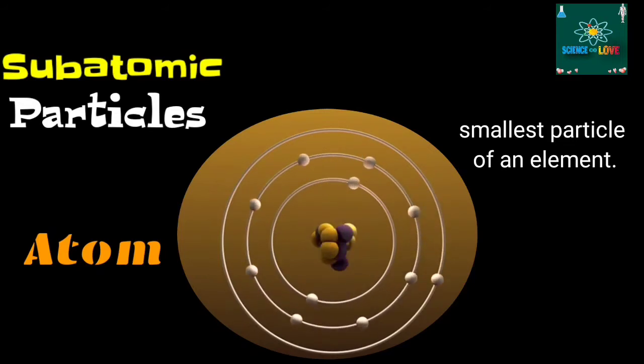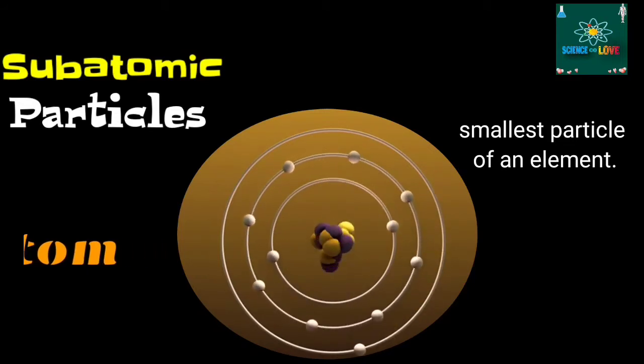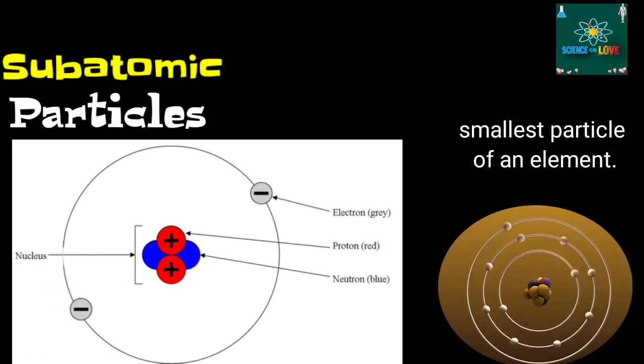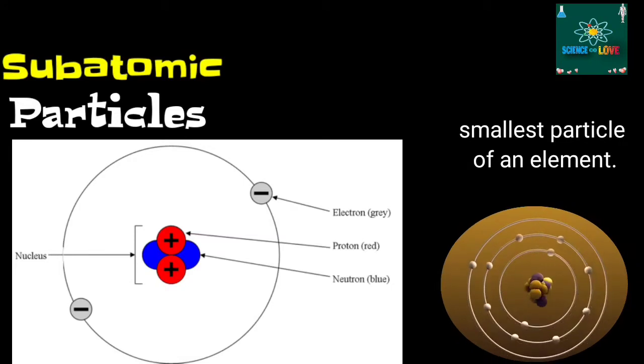An atom has subatomic particles, namely protons, electrons, and a neutron, that are held together by nuclear bands to maintain the electrostatic attraction between the electron and the nucleus.